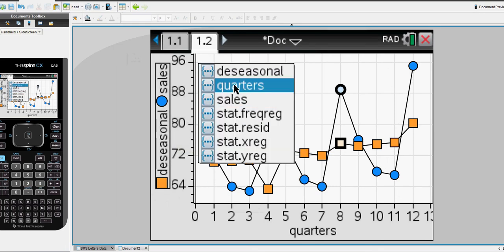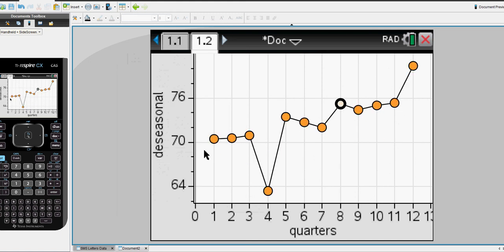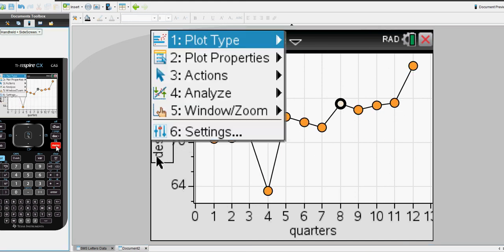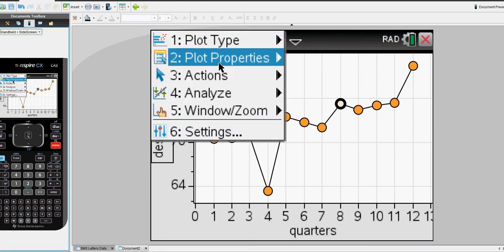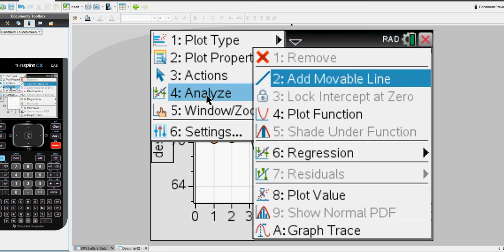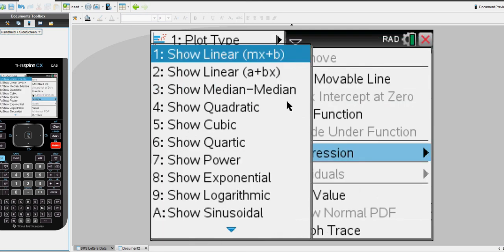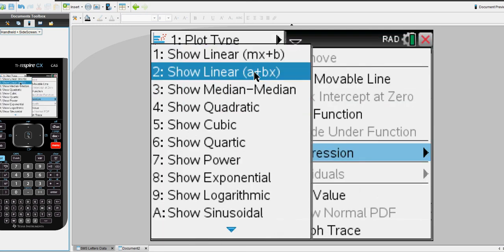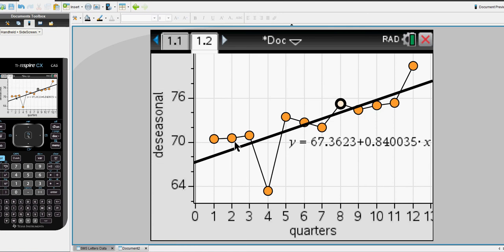Let's remove and go back to our deseasonalized. We'll look for a line of best fit, a regression line. So menu, analyze, regression, and we like the a plus bx format. There's our equation: Y equals 67.36 plus 0.84 lots of x.